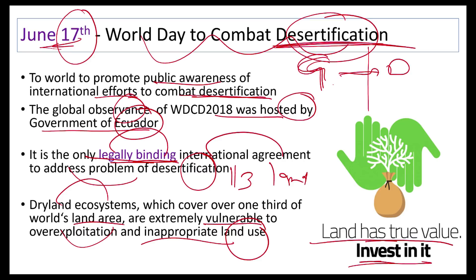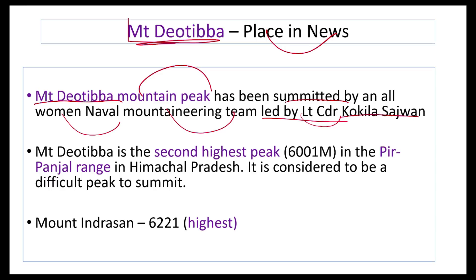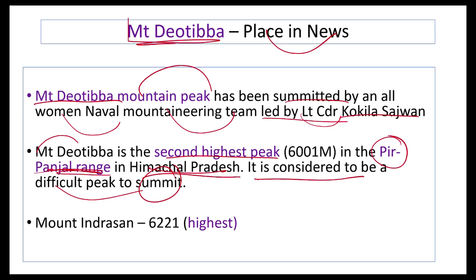Mount Deo Tibba was in news as it was scaled by an all-women naval mountaineering team led by Lieutenant Commander Kokila Sajwan. Mount Deo Tibba is the second highest peak in the Pir Panjal range in Himachal Pradesh — the largest range in the Himalayas and considered a difficult peak to summit. The highest peak in Pir Panjal is Mount Indrasan at 6,221 metres.